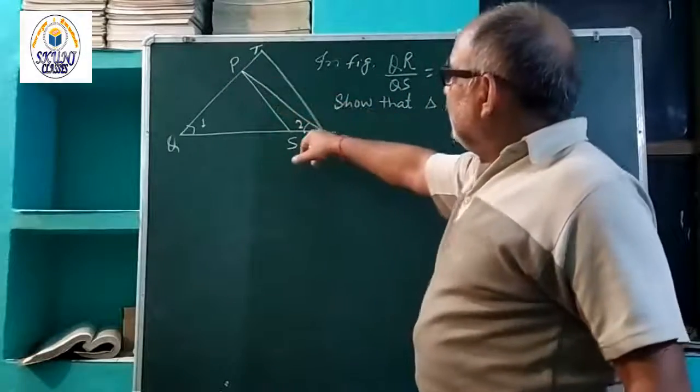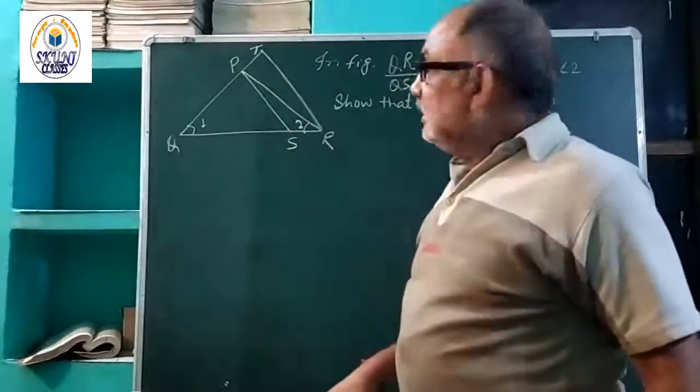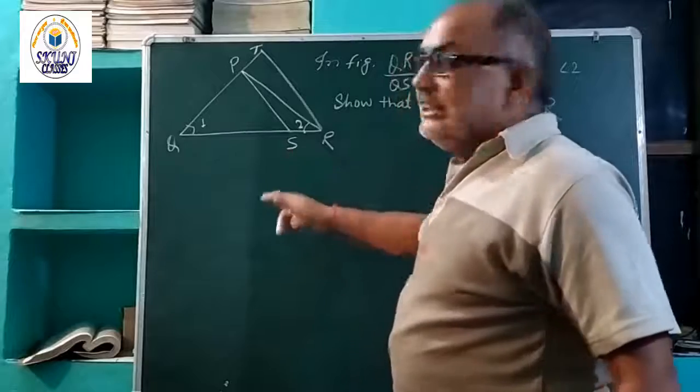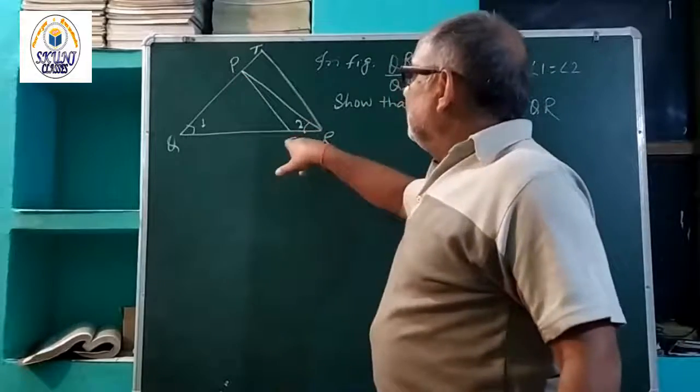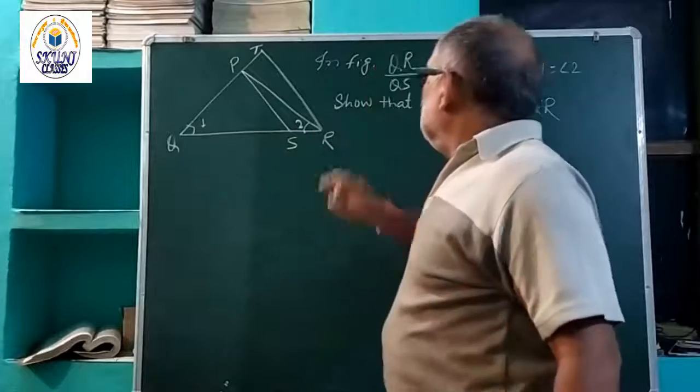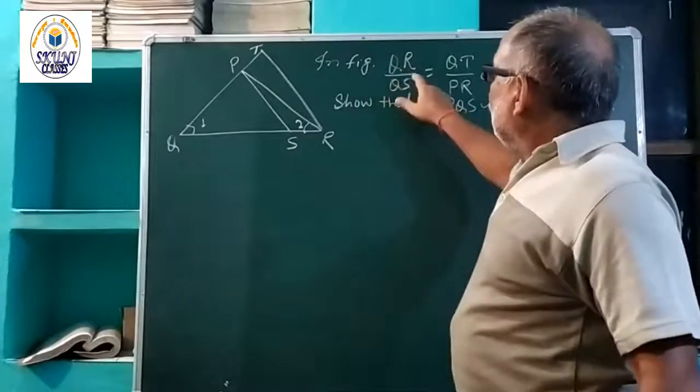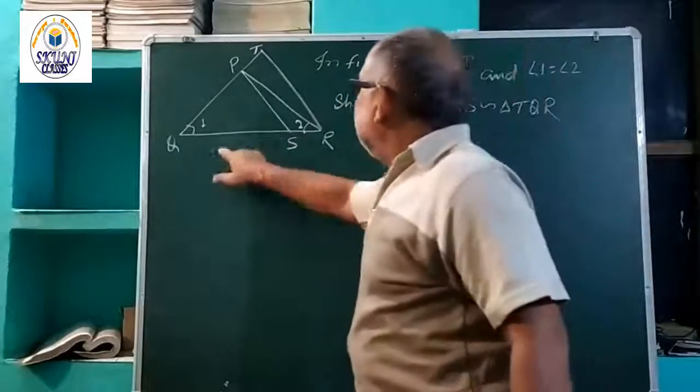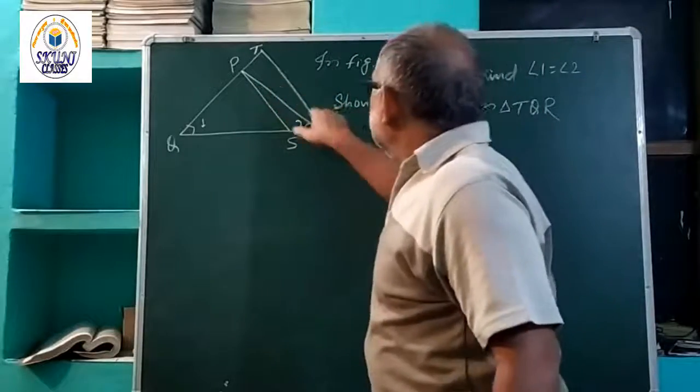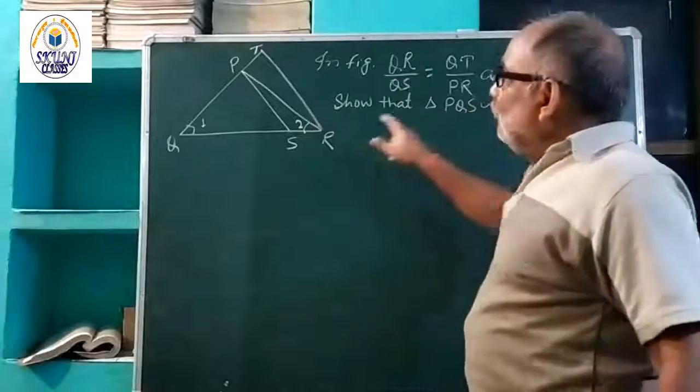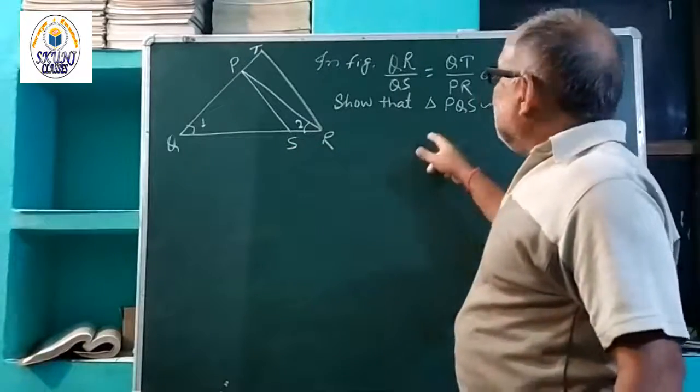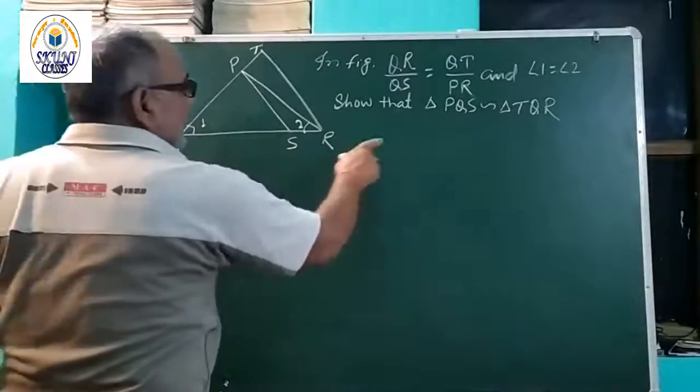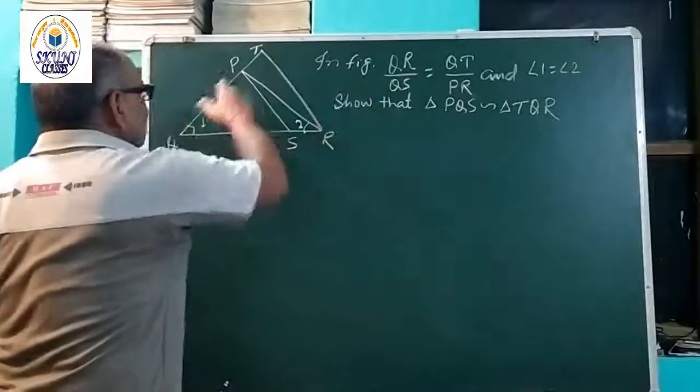PQR is a triangle in which S and T are points on QR and QT respectively. Here are angle 1 and angle 2. In this figure, QR by QS equal to QT by PR, and angle 1 is equal to angle 2. We need to show that triangle PQS is similar to triangle TQR.